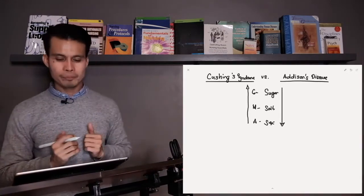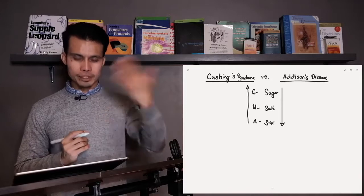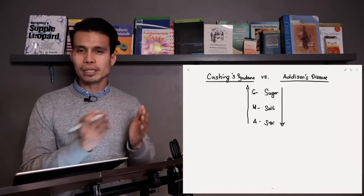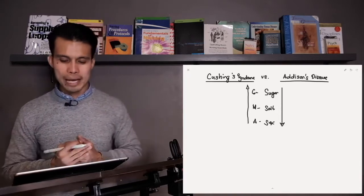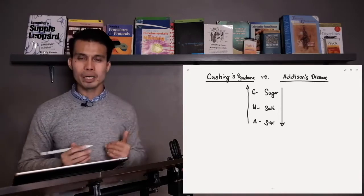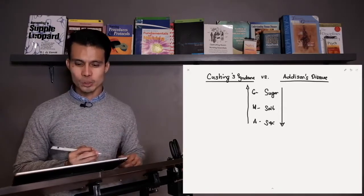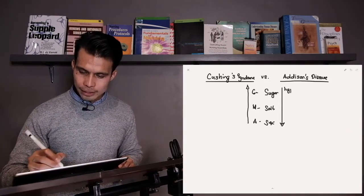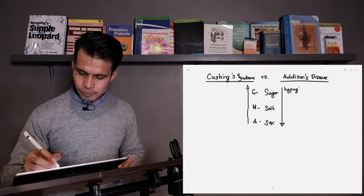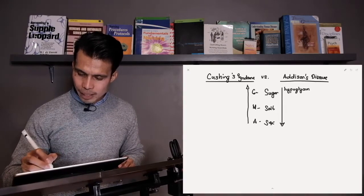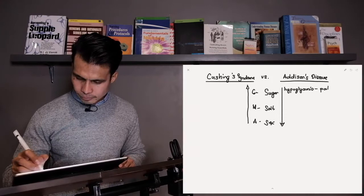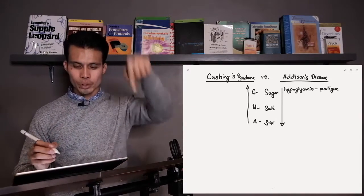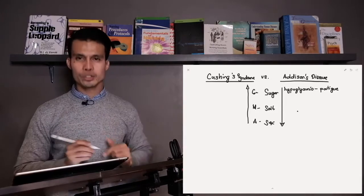Where should we place easy fatigability due to hypoglycemia? Hypoglycemia obviously belongs in Addison's. Why? Because in Addison's we have decreased glucocorticoids, decreasing your sugar. And hypoglycemia can lead to fatigue.